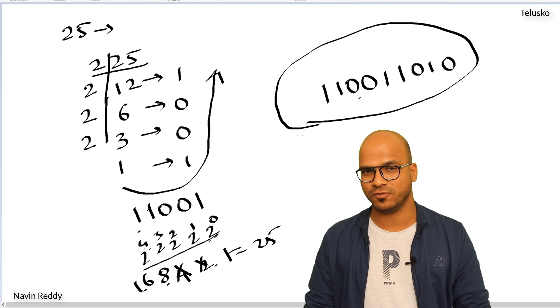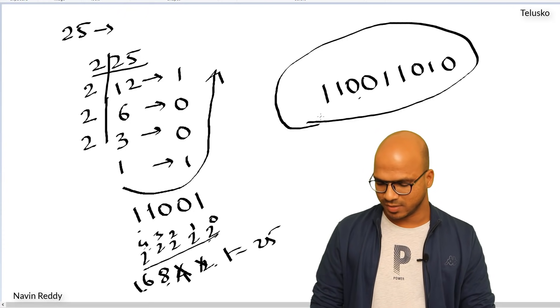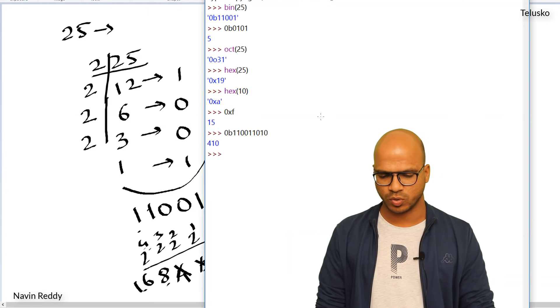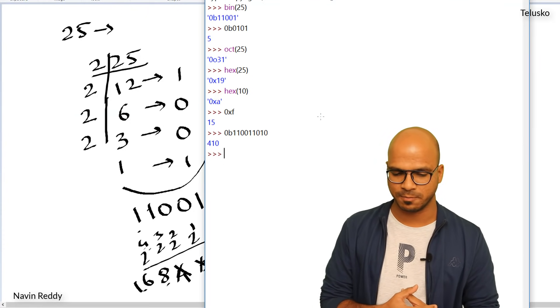That's it, everyone — that's how you work with different number systems in Python. I hope you enjoyed this video. Let me know in the comments, and I'll see you in the next one. Bye!